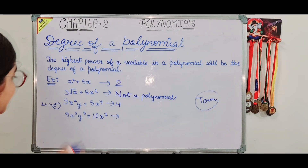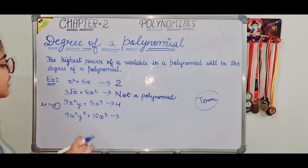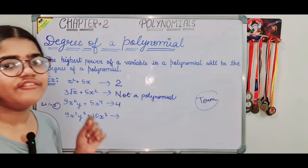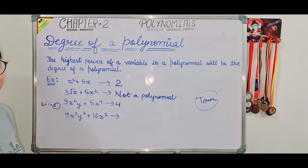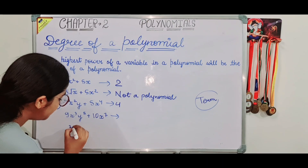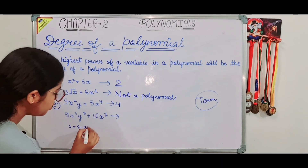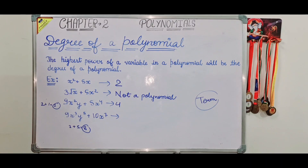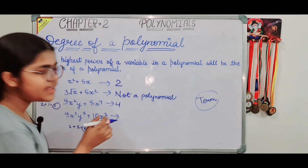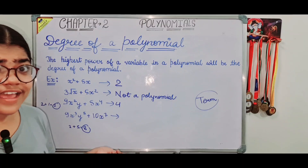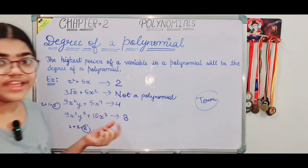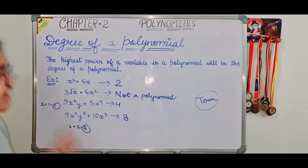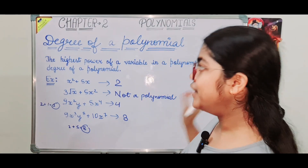Last example for degree: 9x cubed y to the power 5, plus 10x to the power 7. For the first term, x has power 3 and y has power 5, so 3 plus 5 equals 8. The second term has power 7. The highest is 8, so the degree of this polynomial is 8.